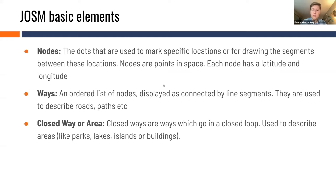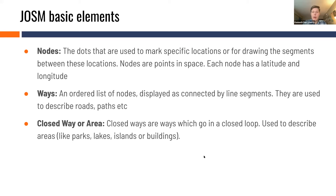The JOSM basic elements: nodes are dots marking specific locations, each with a designated latitude and longitude. Ways are ordered lists of nodes connected by line segments, used to describe roads, paths, rivers, and linear features. Closed ways (also called areas) are ways that go in a closed loop — when you click the initial node again to close it off, you create an area. These are used to describe parks, lakes, islands, or buildings.